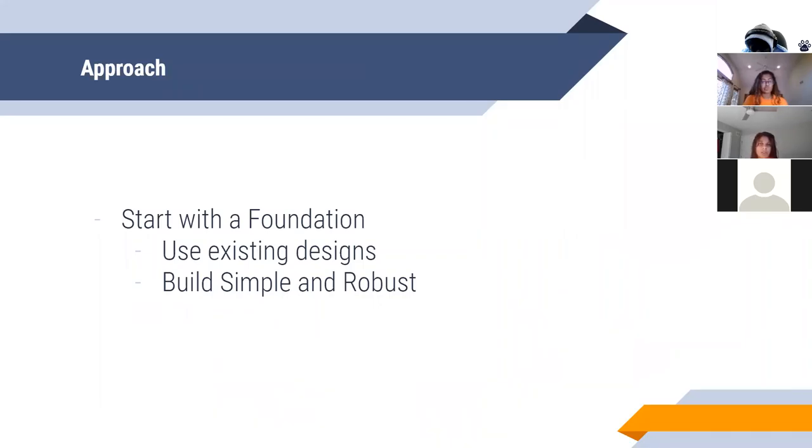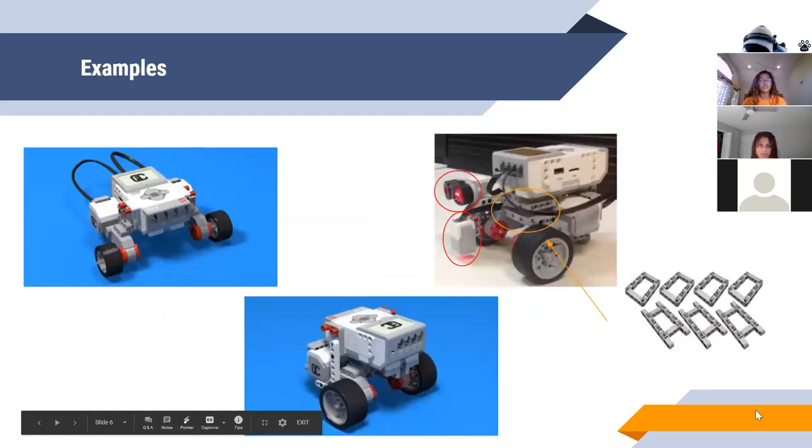When building, you want to start super simple. So focus on what qualities you want your robot to have and the simplest way to achieve them. For a lot of new teams, they have no idea where to even begin. So I recommend doing some research on the internet for existing robot designs. If you look up 5-Minute Bot on the internet, there are a lot of designs and guides that your team can use. So this slide has some examples of those.